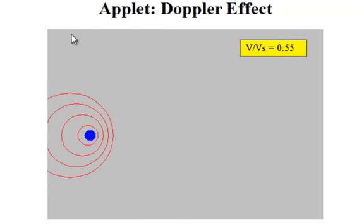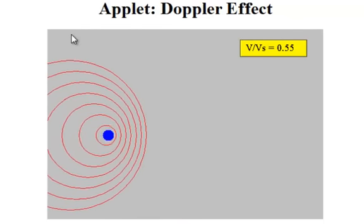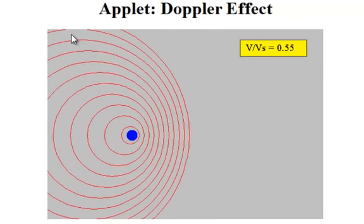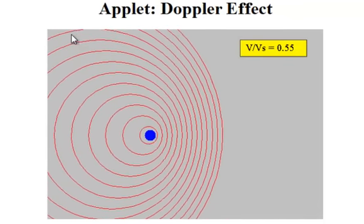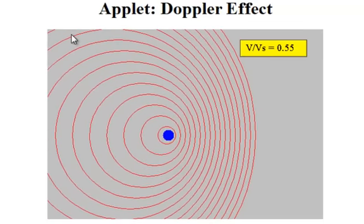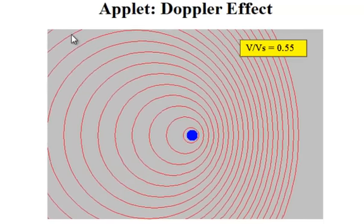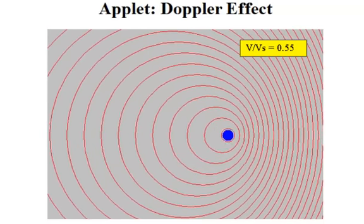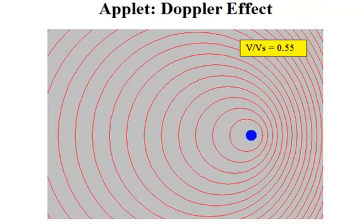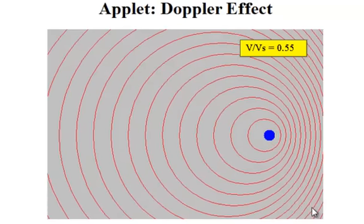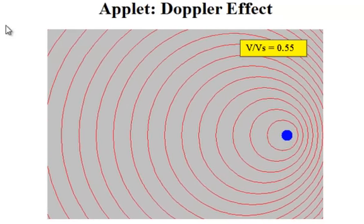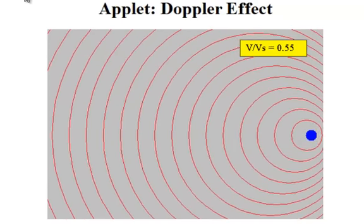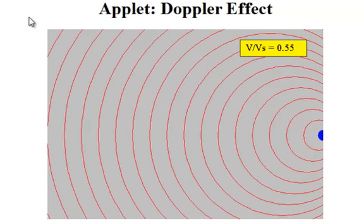But now, let the source move. And look what happens. The source still vibrates with its same original frequency. If the source is approaching the observer, then the source catches up to the wave fronts that it produced in previous instances of time, and the observer hears a higher frequency. On the other hand, if the observer is behind the moving source, the wave fronts are more distantly spaced, and the observer receives a lower frequency.